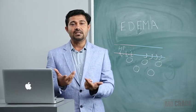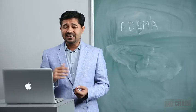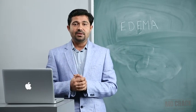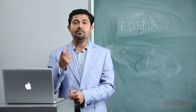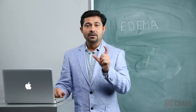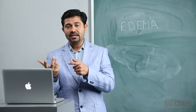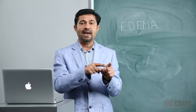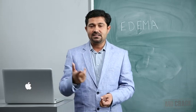Now let's look at causes of intracellular edema. The first cause is decreased metabolic activity. The cell membrane has an active sodium-potassium ATPase pump that is highly dependent on oxygen supply. This pump takes three sodium ions out of the cell and brings two potassium ions in, using ATP. It requires continuous oxygen supply.